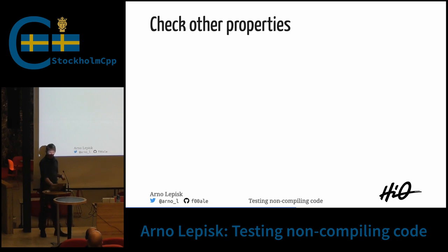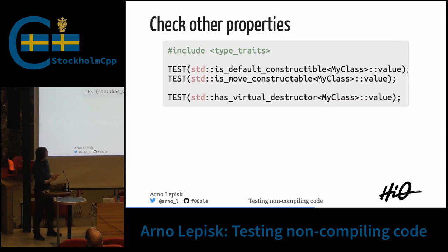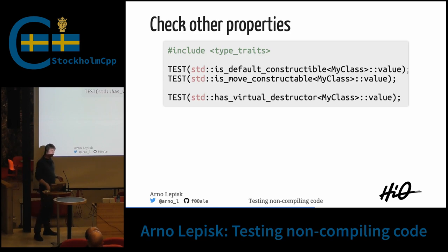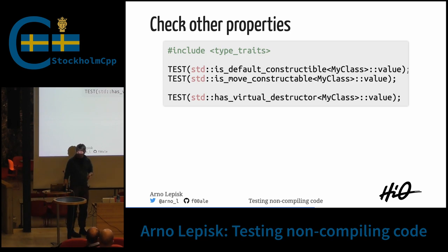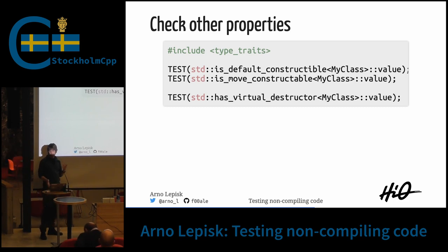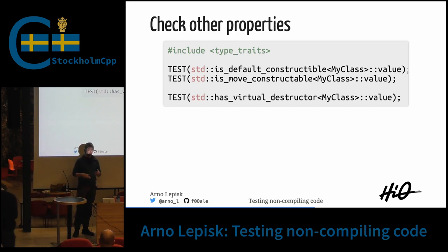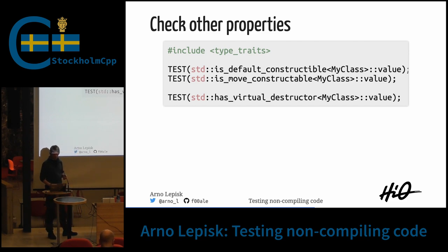Of course, we can check other properties — like if a class is default constructible, we might want to disallow that. We can check move constructibility, whether we have a virtual destructor, and so on. We can also check if something is callable in a non-throwable way.